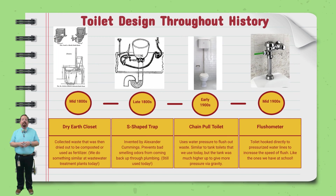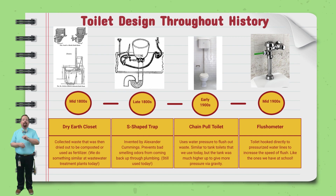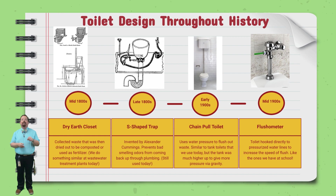In the mid-1800s, the design of the dry earth closet started to become popular. It would collect the waste in such a way that you could move it somewhere else, dry it out, and use it as compost or fertilizer. Interestingly enough, many water treatment plants today take solid waste — they call it sludge — burn off the methane produced as it decomposes, and then let farmers use the dry solid waste as fertilizer.